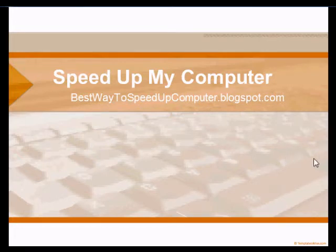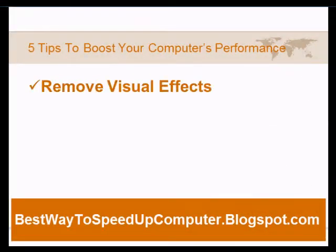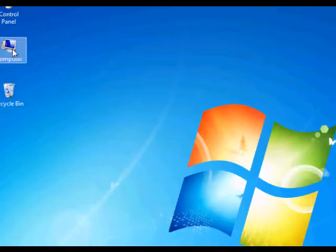It really depends on the condition of your computer. These tips work for Microsoft Windows XP, Vista, and 7 as well. The first tip is called removing visual effects. Visual effects are effects that make your Windows look nicer, such as fading and shadows. These effects slow down your computer because they take processing power, so removing them could actually give you a significant speed increase.